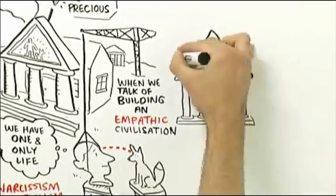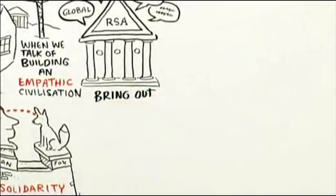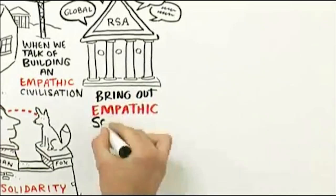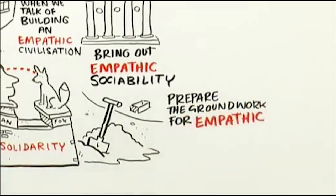If we can have a global debate, let us start here from the British Royal Society for the Arts, to begin rethinking human nature, to bring out our empathic sociability so that we can rethink the institutions of society and prepare the groundwork for an empathic civilization.